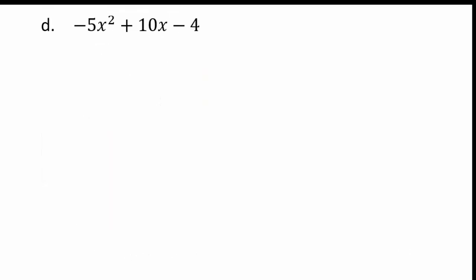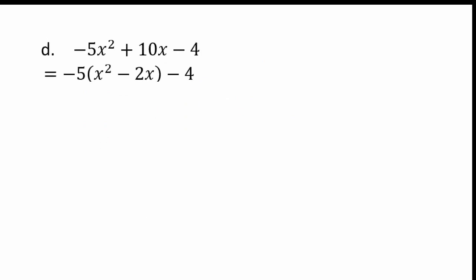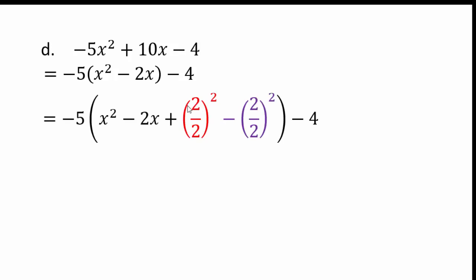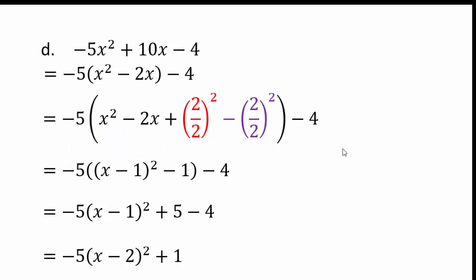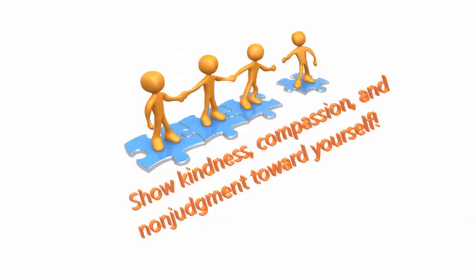For the final example, pull out negative 5 to get negative 5 times the quantity x squared minus 2x, adjusted. Add 2 over 2 squared and subtract the same, giving x minus 1 squared inside. Then adjust: that's minus 1. Distributing negative 5: negative 5 times x minus 1 squared, and negative 5 times negative 1 gives positive 5, then subtracting 4 gives plus 1. The advantage of completing the square is we can write all quadratic polynomials in the form: leading coefficient times a perfect square plus a constant.